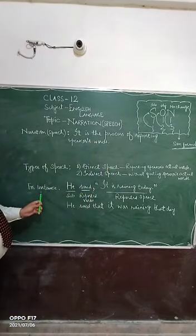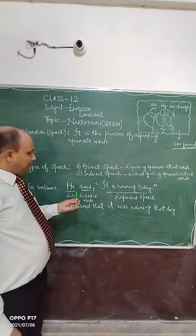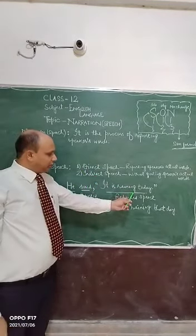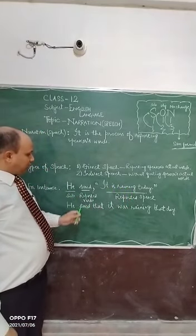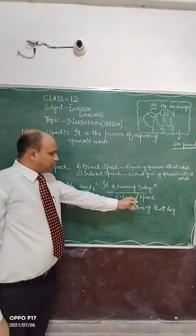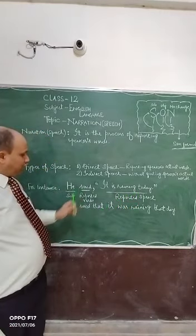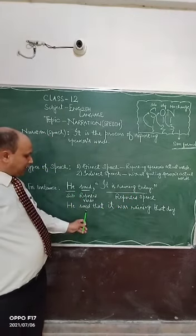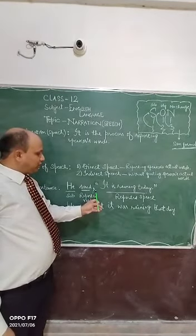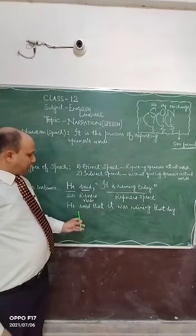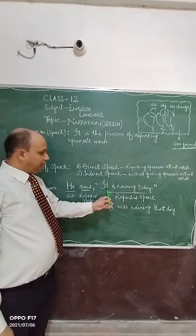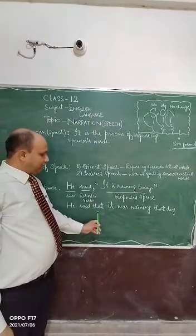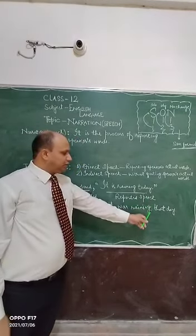For example: 'He said, it is raining today.' Here, 'he' is the subject, 'said' is the reported verb, and the sentence is called reported speech. When we convert it to indirect speech, we remove the comma and inverted commas and add the conjunction 'that'. Since 'said' is in past tense, the tense changes: 'He said that it was raining that day.' Note that 'today' changes to 'that day'.